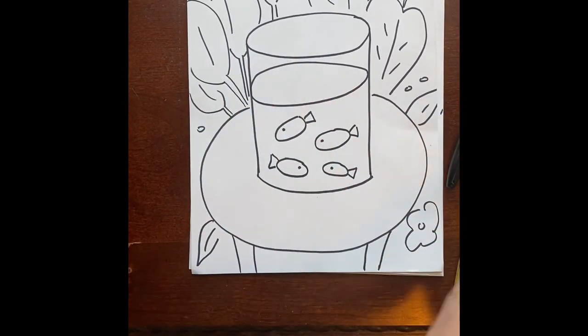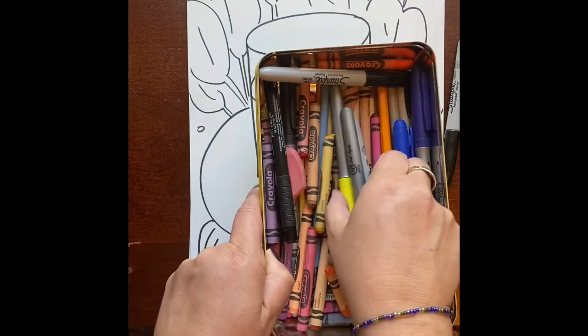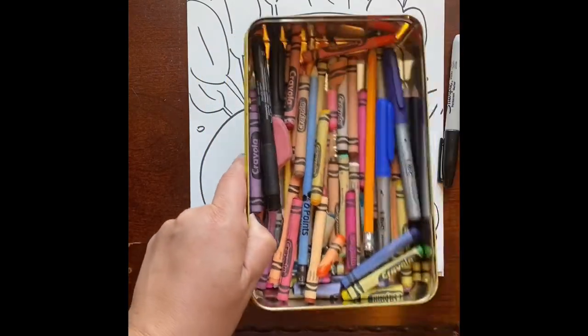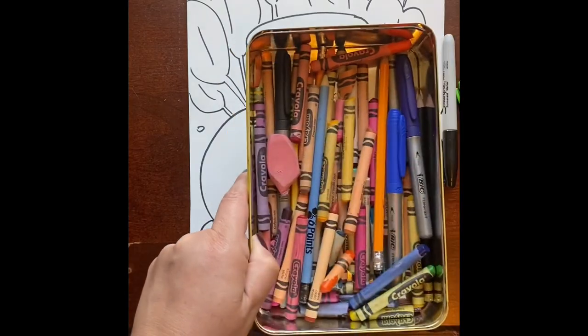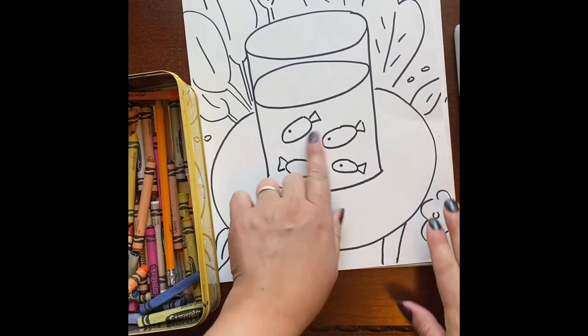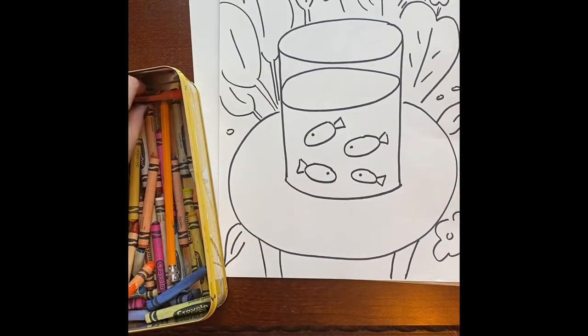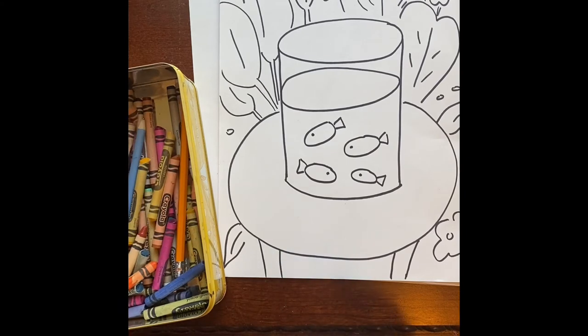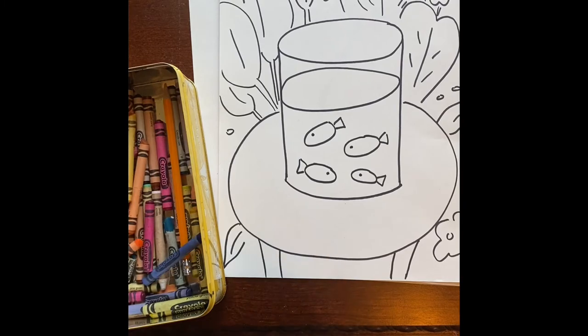After you have it all traced out, you can take out whatever you're going to color with. I'm going to use mostly crayons for this project, but markers or colored pencils would work well too. I want to show you what I'm talking about with the reflection up here. I'm going to color my goldfish a little bit of a red orange and orange colors.